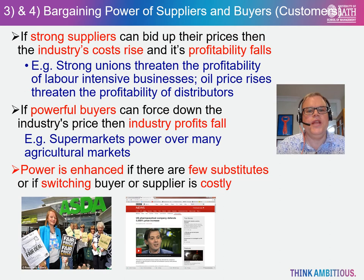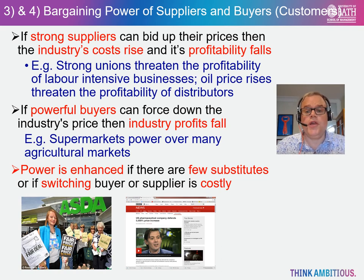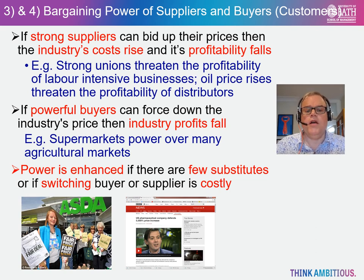The third and fourth forces relate to the supply chain and the firm's position within it. The bargaining power of a firm's suppliers will have an impact upon its profitability. For instance, if you purchase your inputs from a monopolistic supplier then the price you pay for these inputs is likely to be high, and this will inflate your costs and reduce your profitability accordingly. For example, if trade unions are strong this might drive up wage costs in labour intensive industries. In terms of the bargaining power of buyers, if this is strong and if you are negotiating with a monopsonistic buyer, then this will also affect your profitability since they can drive down the prices they pay for your product.